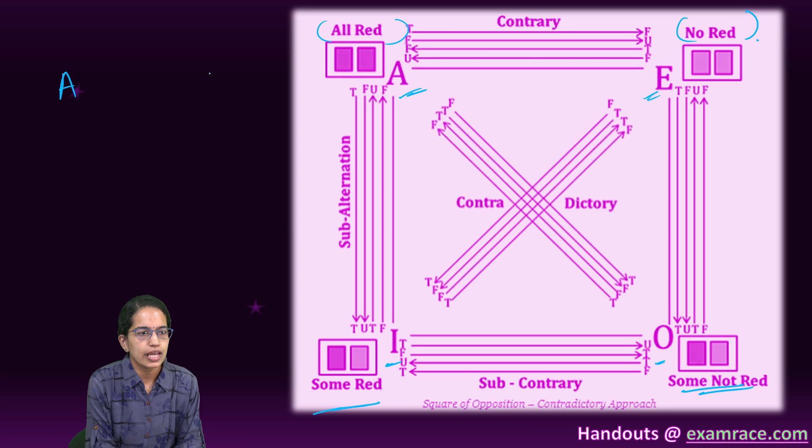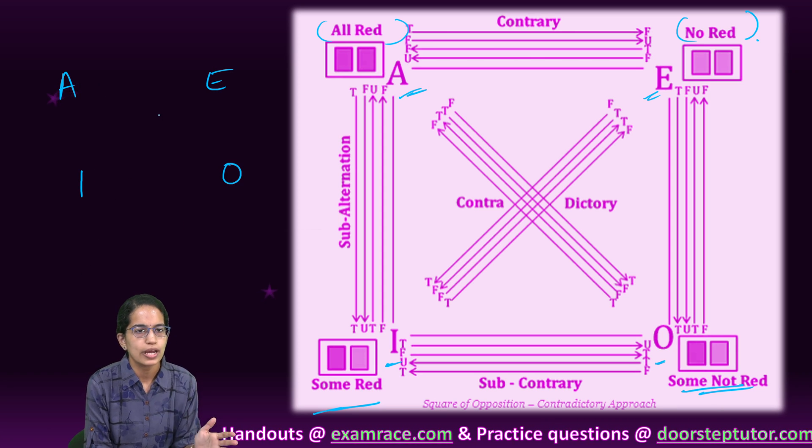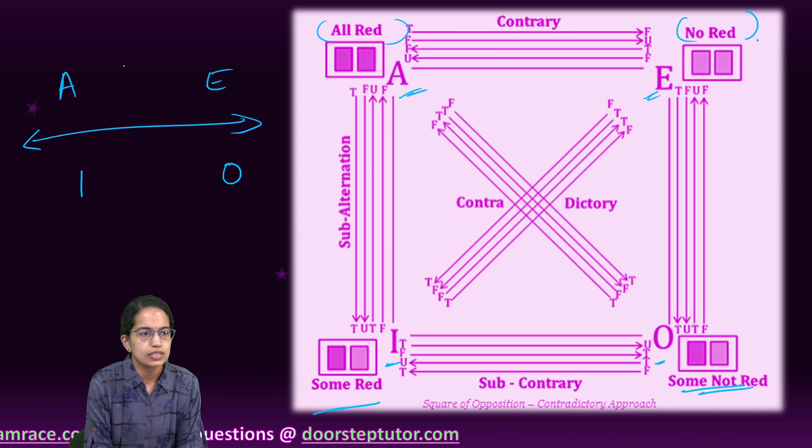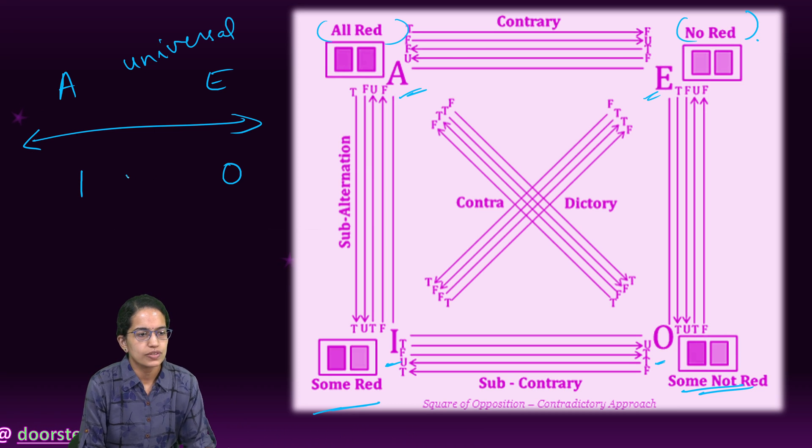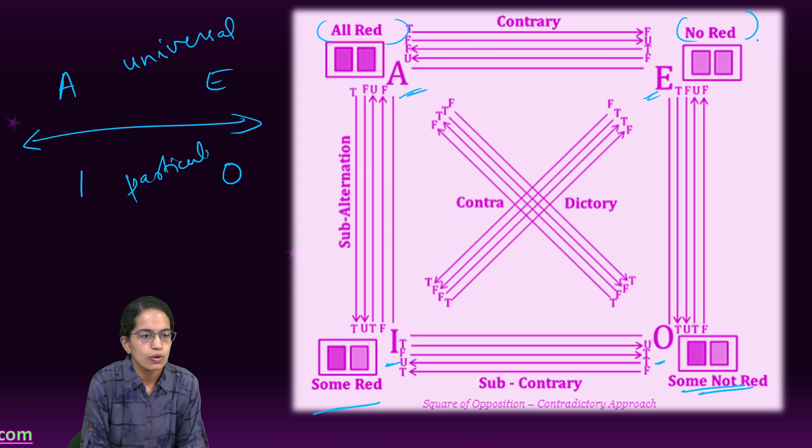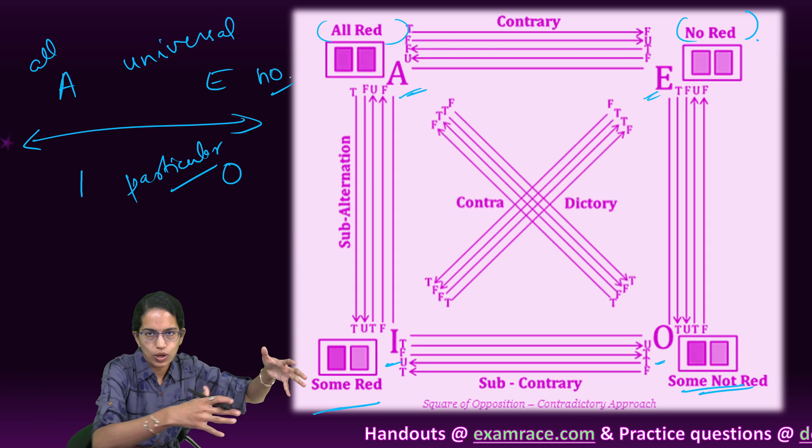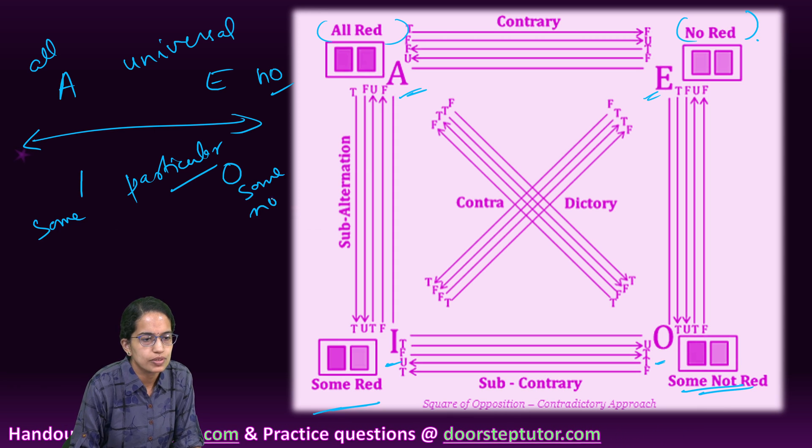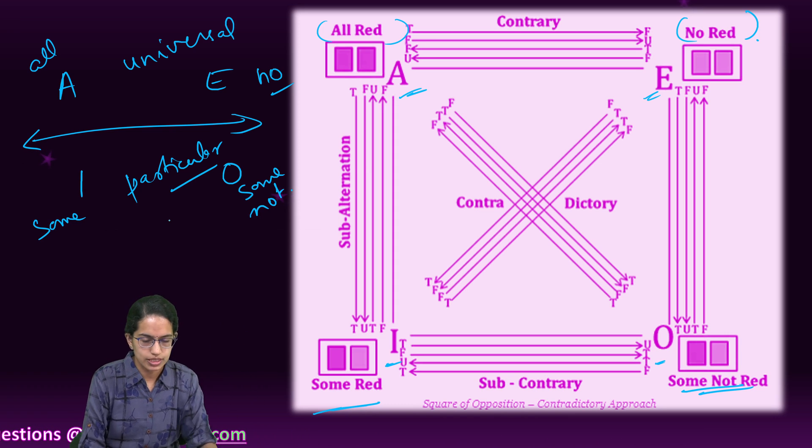Now this AEIO, I and O, I can divide into two ways. One is how I divide it horizontally. So both of these are universal in nature, and both of these are particular. Because all and no, we take all the elements. They can be together one or none of them can be there. But here it is some and some not. So we call it as universal and particular. That is the horizontal segregation.